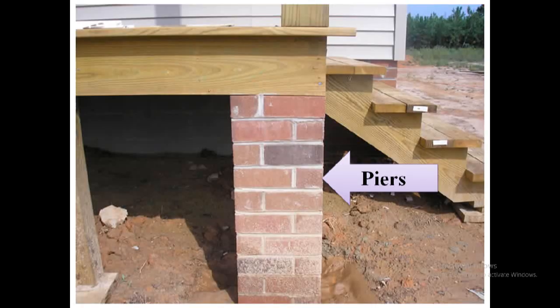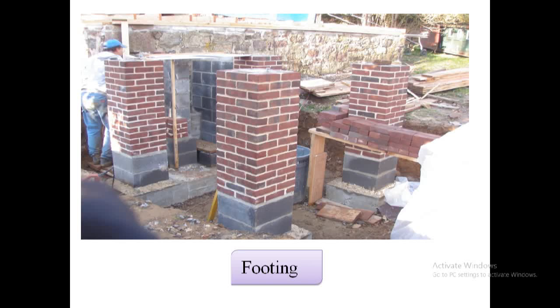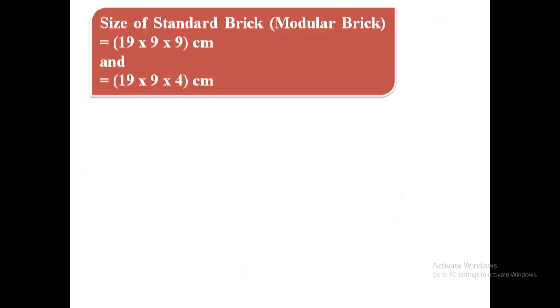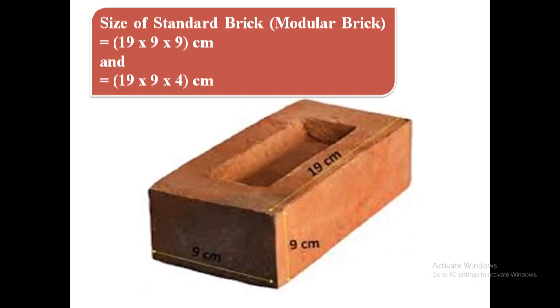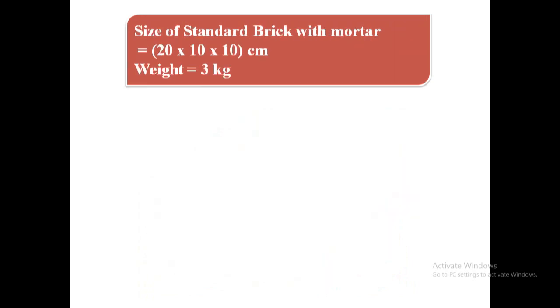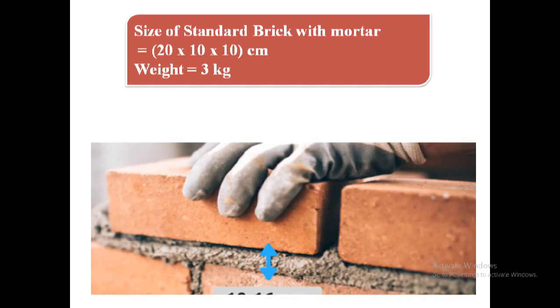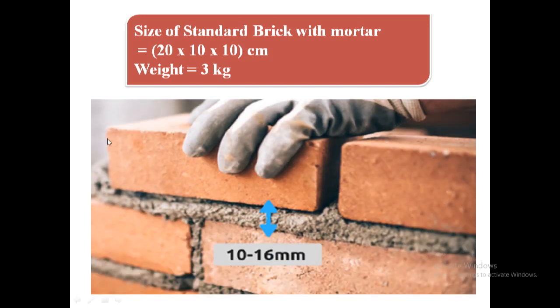Size of standard brick, also known as modular brick, is 19 by 9 by 9 centimeter and 19 by 9 by 4 centimeter. When placed in masonry, a 19 by 9 by 9 centimeter brick with mortar becomes 20 by 10 by 10 centimeter because thickness of mortar is 1 centimeter, and weight of such brick is 3 kilogram.